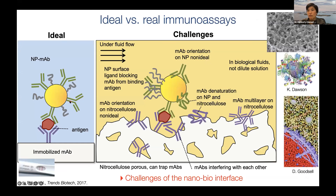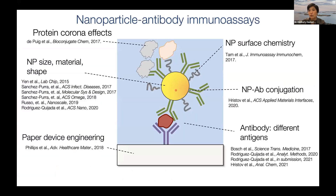We study nanoparticle-biomolecule interfaces extensively. There are a lot of interfaces in these tests — this is a double binding event where the biomarker of interest binds to both immobilized antibodies on the paper and on the nanoparticle. Surface effects abound: denaturation, poor orientation of the antibody, et cetera — so this is a challenging environment. We vary parameters to either improve sensitivity or impart new capabilities: nanoparticle size, material, and shape; surface chemistry; conjugation chemistry; protein corona effects; and paper device engineering.